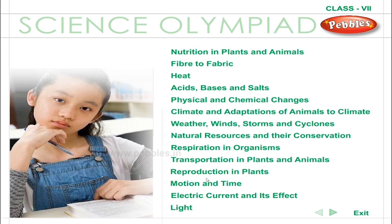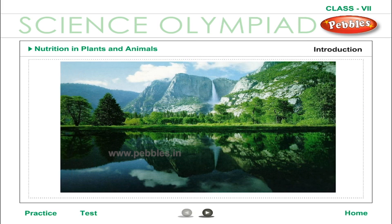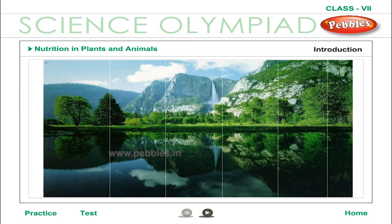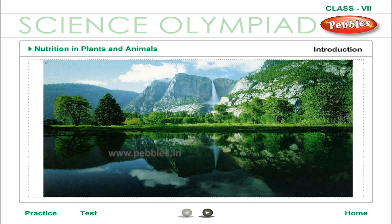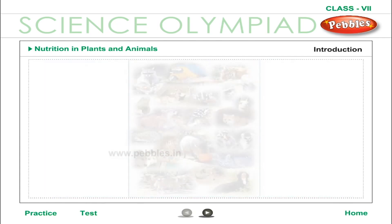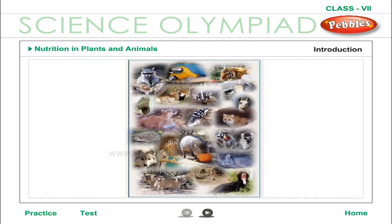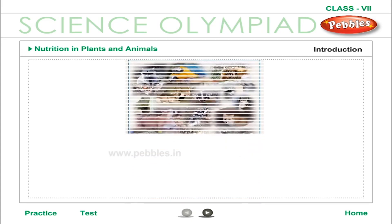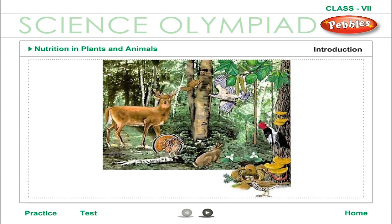Science Olympiad Class 7: Nutrition in Plants and Animals. A living organism shows seven basic characteristics that differentiate it from a non-living one. These characteristics are called life characteristics because together they ensure that an organism continues to live. Though all living organisms show these characteristics, there are clear differences in the manner plants and animals carry them out.